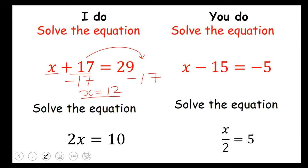To check that we are correct, substitute that 12 back in the equation. So 12 plus 17 we get 29.